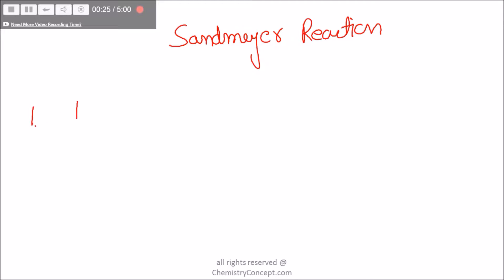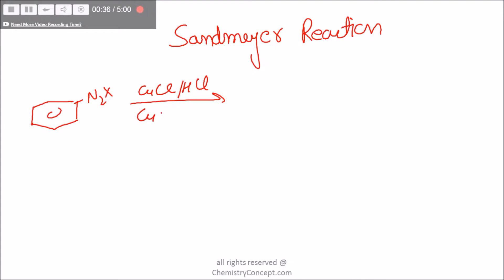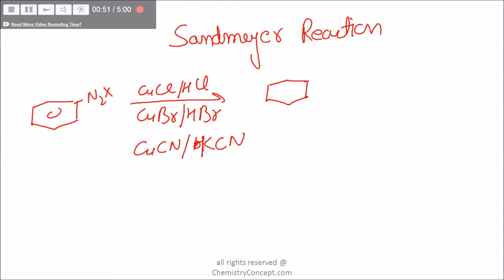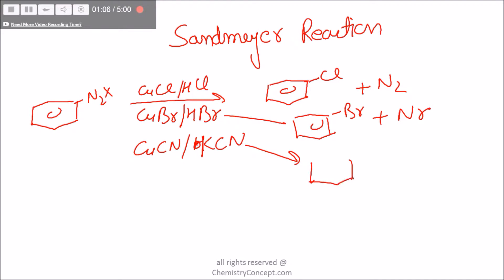In Sandmeyer's reaction, when a Diazonium salt is reacted with CuCl in the presence of HCl, or CuBr in the presence of HBr, or CuCN in the presence of KCN, we get chlorobenzene plus nitrogen, bromobenzene plus nitrogen, or a cyano compound plus nitrogen, respectively.